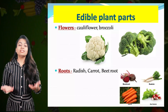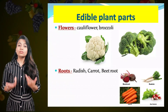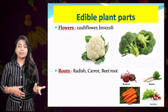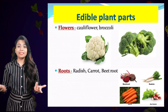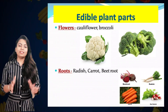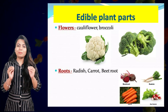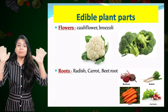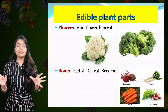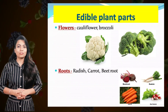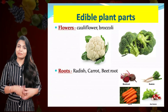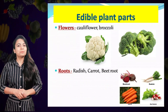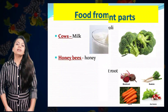Next category is flowers. We also eat flowers of the plant, for example cauliflower and broccoli. So my dear students, we eat different parts of the plant, not only a single part. There are lots of edible parts of the plant that we have discussed. So plants are very important for us.